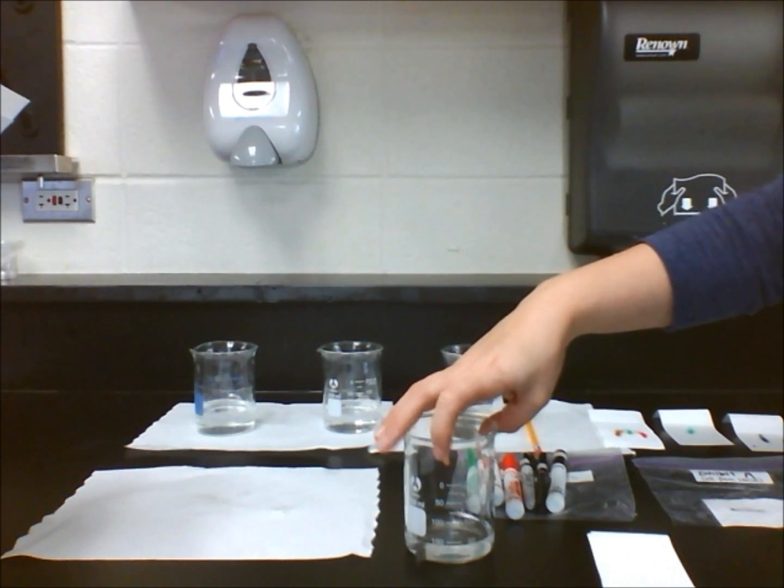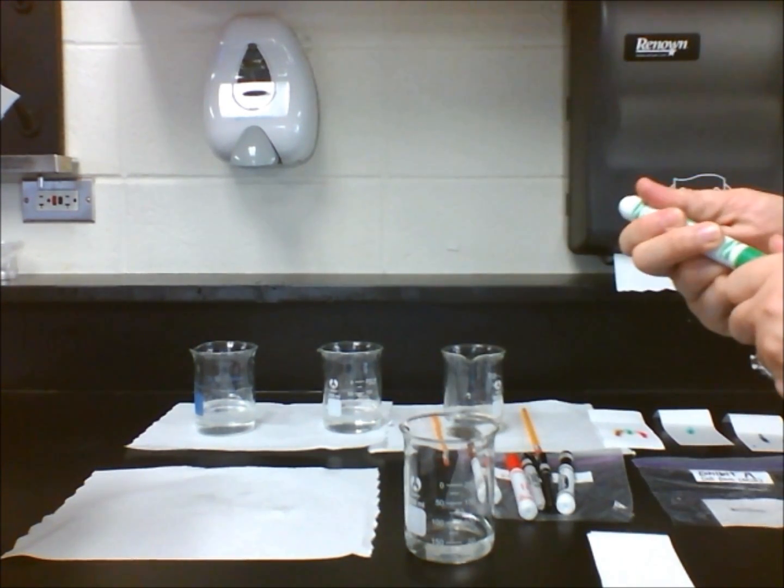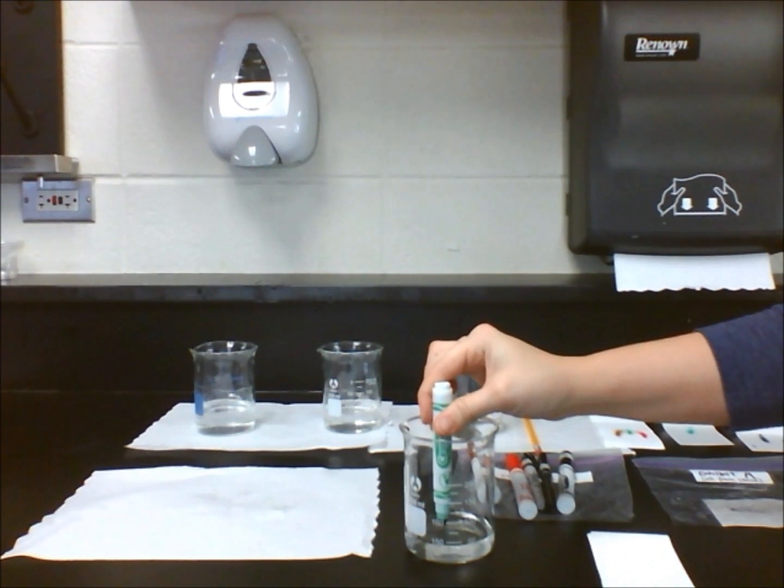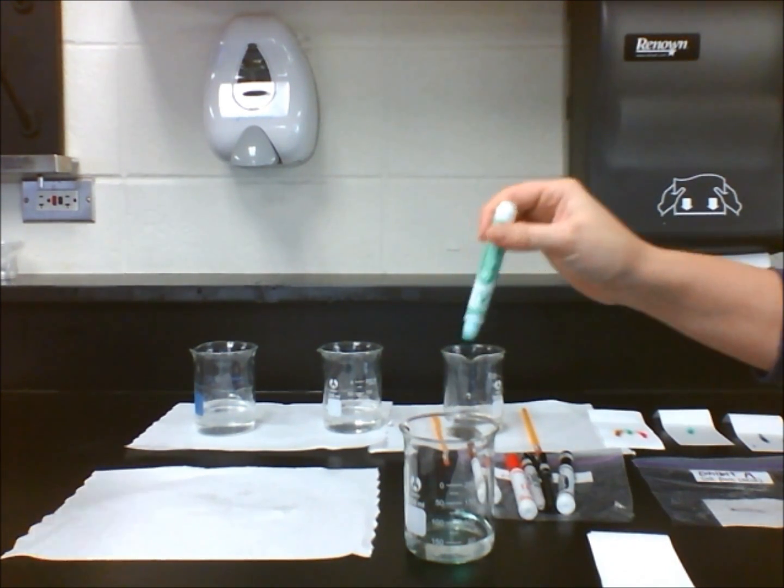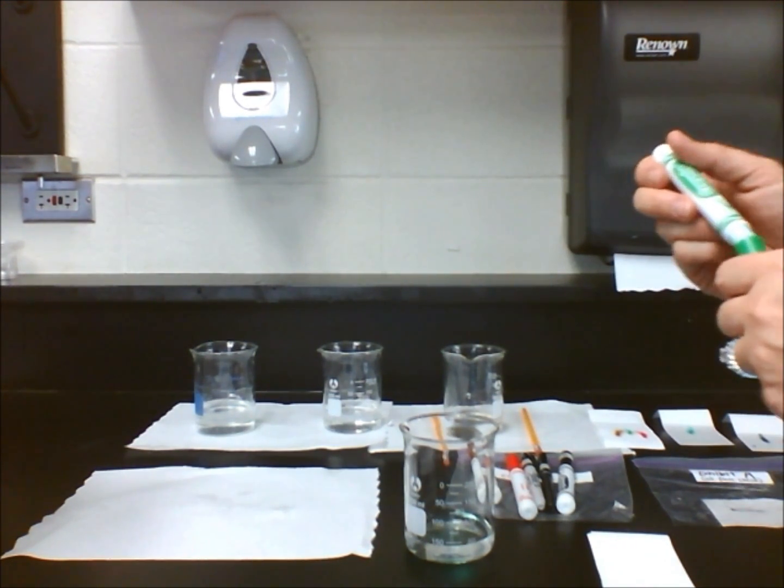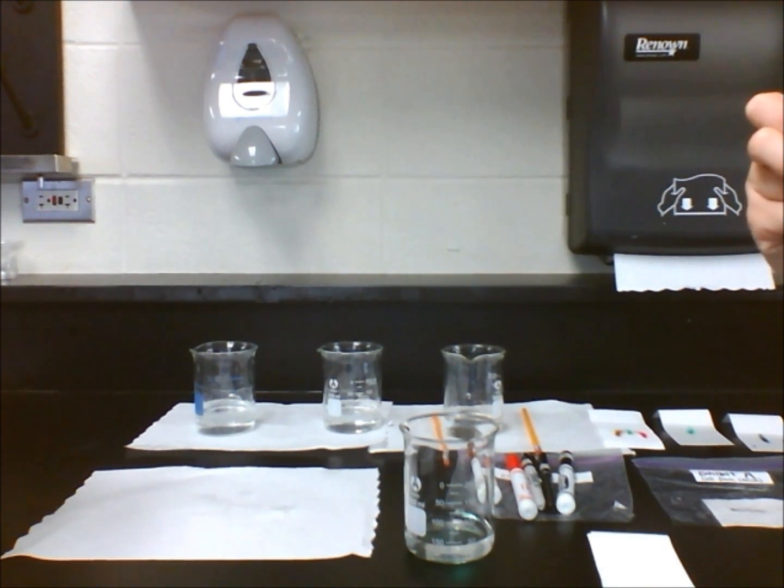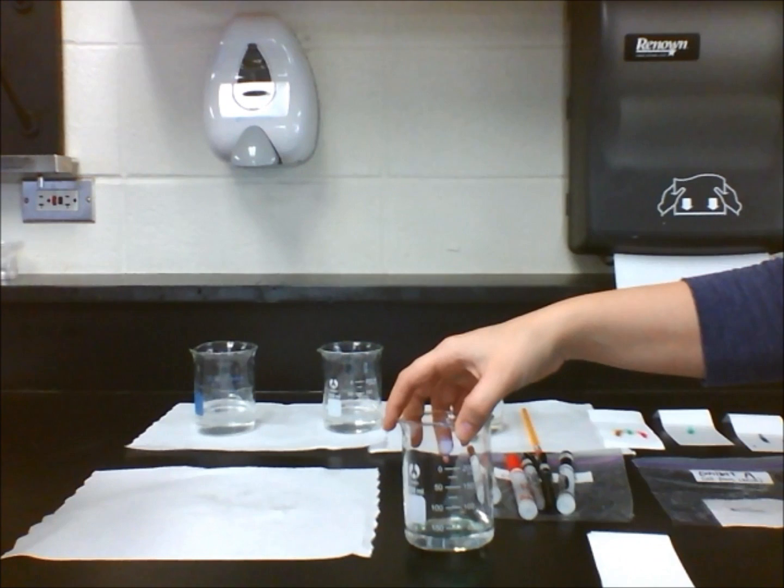Let's fill a beaker with 25 milliliters of water. If we dip the tip of a green marker in the water for just a second, what happens? You will see that the ink dissolves in the water and that it eventually turns light green. We can conclude that the green ink is soluble.